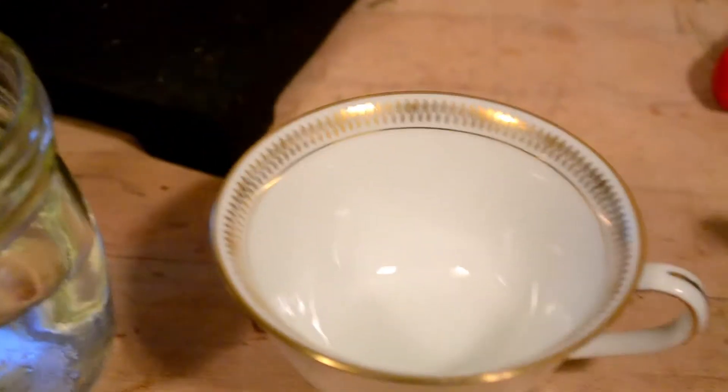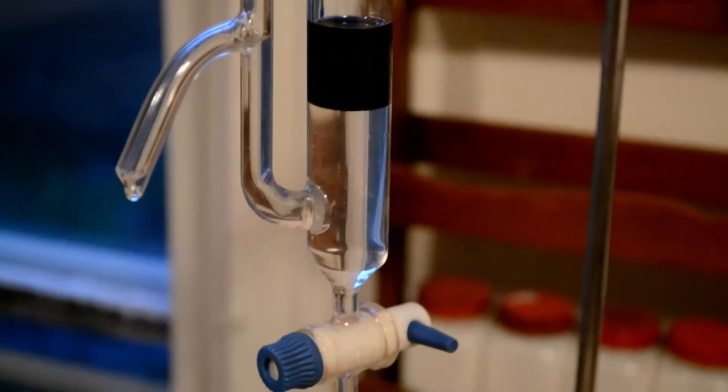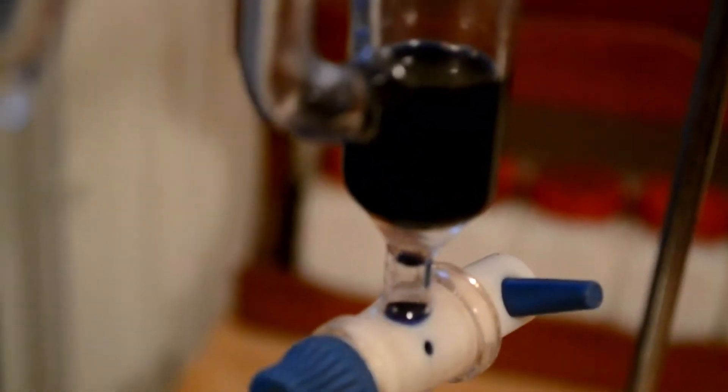The first step is to get rid of the remaining hydrosol. And now I'm going to put the remaining hydrosol and essential oil into the white tea cup.